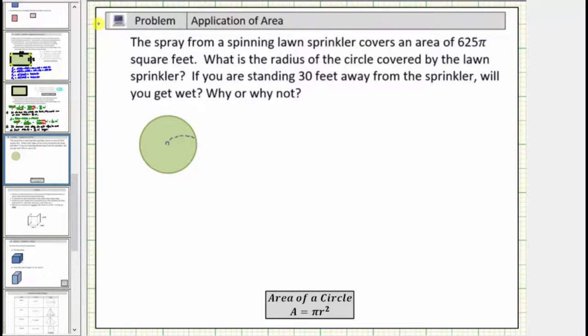Welcome to an application involving area. The spray from a spinning lawn sprinkler covers an area of 625π square feet. What is the radius of the circle covered by the lawn sprinkler? And if you are standing 30 feet away from the sprinkler, will you get wet? Why or why not?